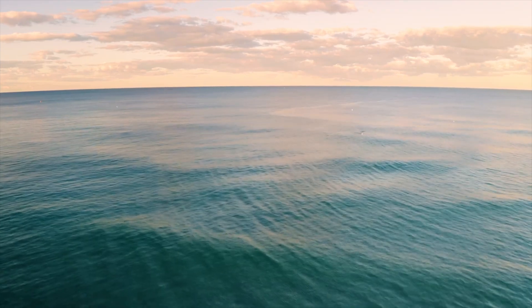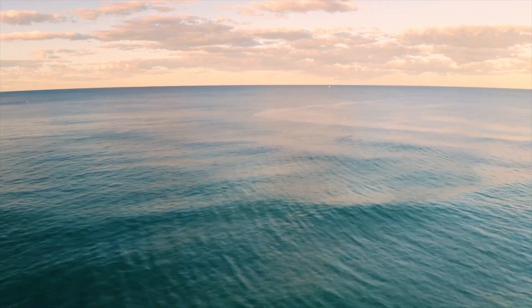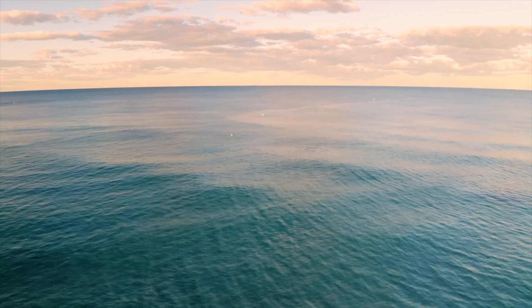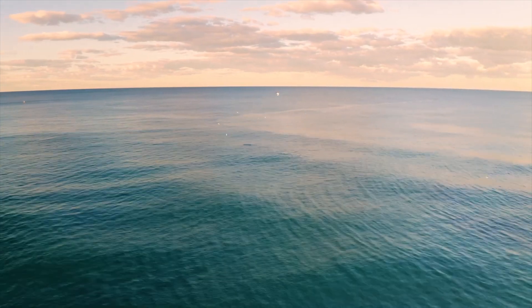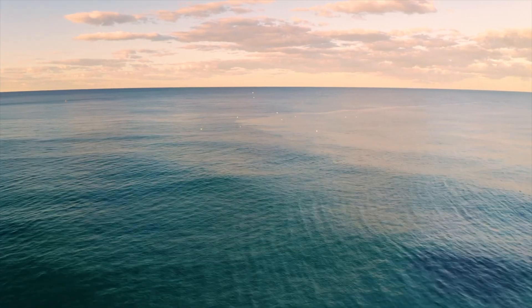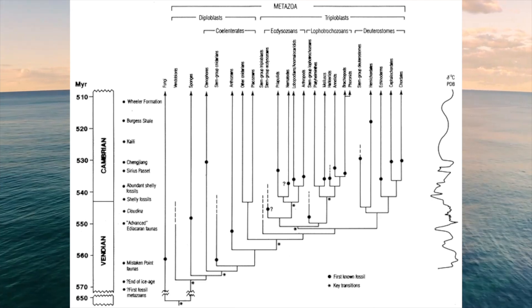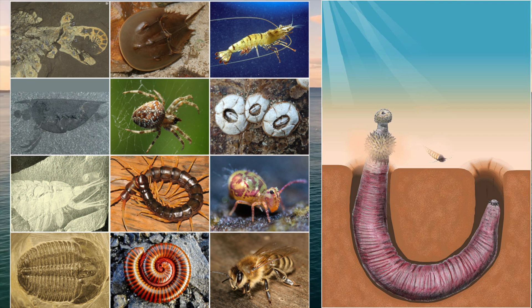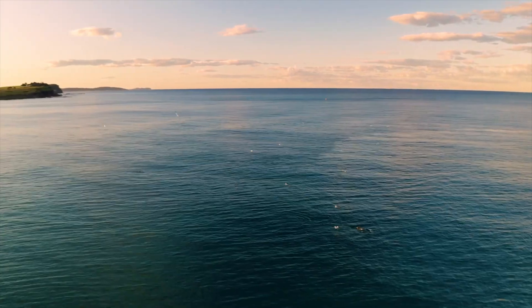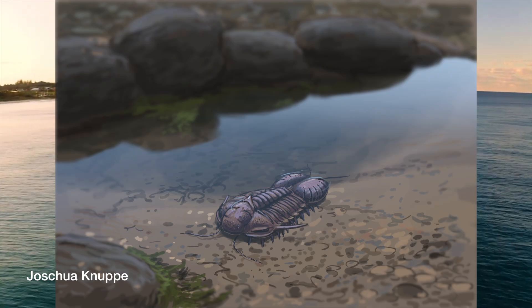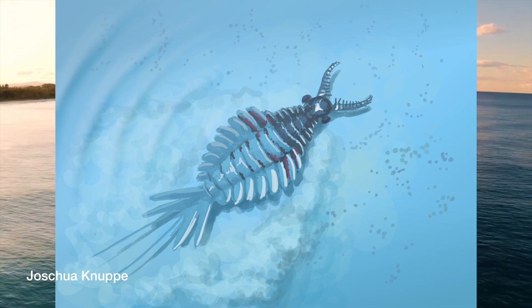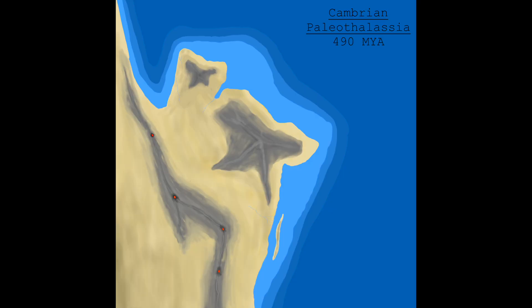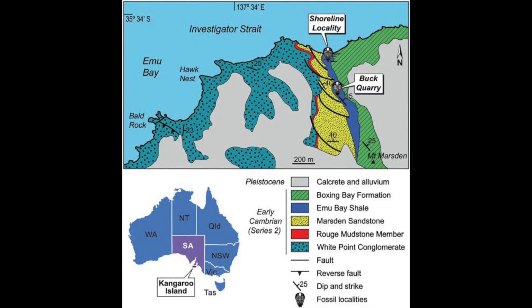The Cambrian is the first period of the Phanerozoic Eon, and therefore the first of the Paleozoic Era. It is a time most notable for the extremely sudden radiation of complex life. This so-called Cambrian explosion is often regarded as an origin point for many modern phyla. Invertebrates like arthropods and priapulid worms were dominant, with the most notable organisms being creatures like trilobites, lobopodians, and radiodonts. In the waters around Paleophilacea during this period, it's likely it shared similar biota to those found in other places across the globe, such as the nearby Emu Bay Shale.